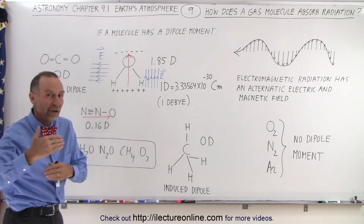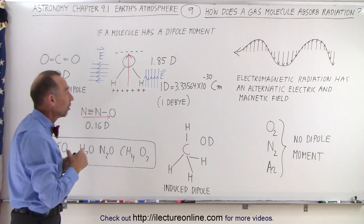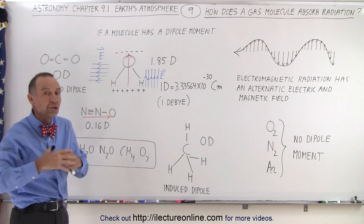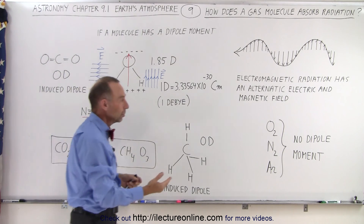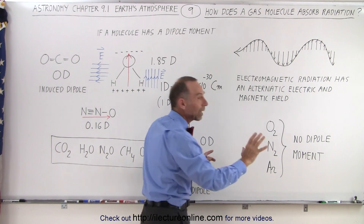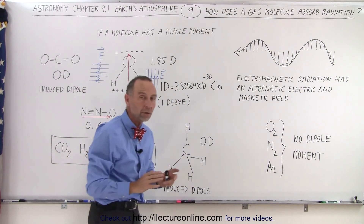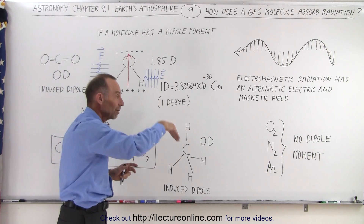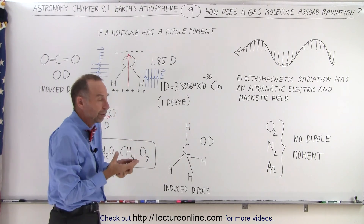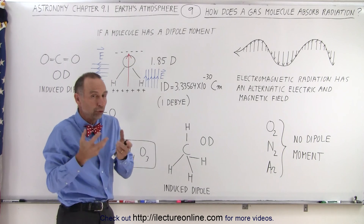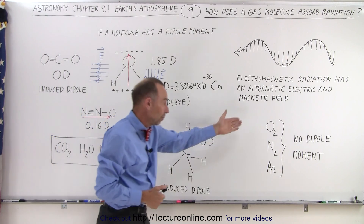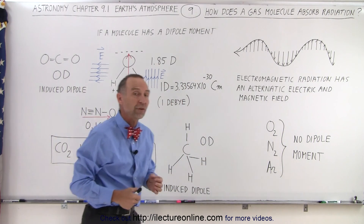Some molecules have a very large dipole moment, some have a very small dipole moment, and some have none at all. For example, the molecules oxygen, nitrogen, and argon have no dipole moment at all, so electromagnetic radiation can simply move right past them, there will not be any interaction, and therefore those molecules do not absorb radiation. That accounts for more than 99% of the atmosphere.